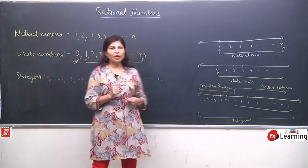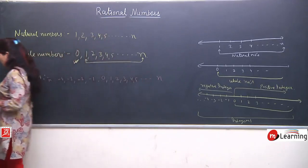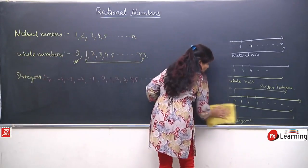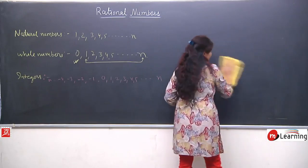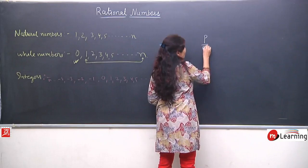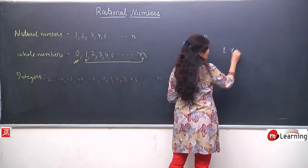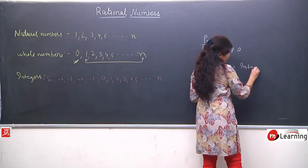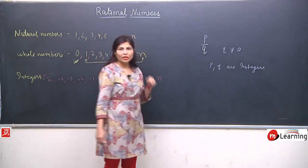Now the question arises: our topic is rational numbers, so why are we learning these other number types? Now, coming to the point — what are rational numbers? Rational numbers are those numbers which are in the form of p upon q, meaning numerator over denominator, where q never equals 0 and p and q are integers. This is not the proper definition yet — just an idea of what rational numbers are.